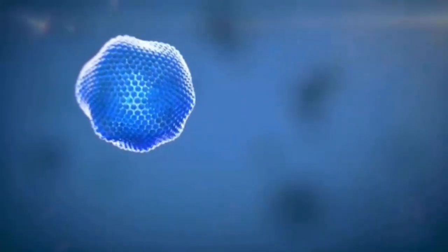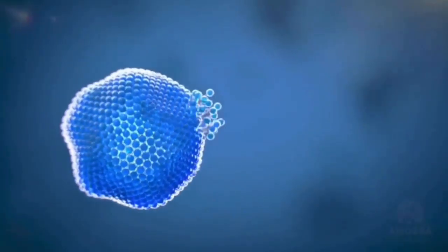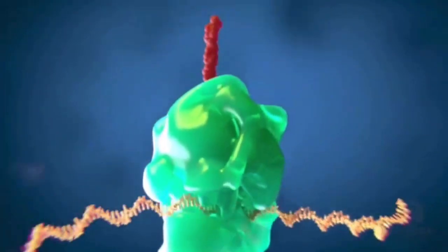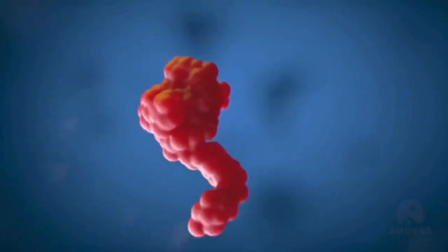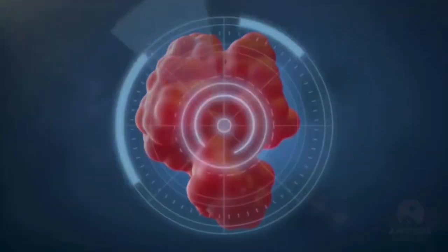When the vaccine is injected, the particles release mRNA into our cells. The code in the mRNA is read and translated into just a small, benign piece of the virus, which the body recognizes when it comes into contact with the real thing.